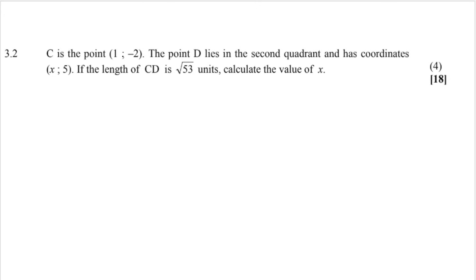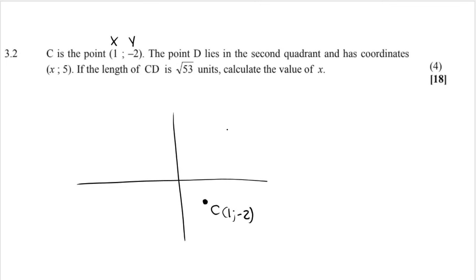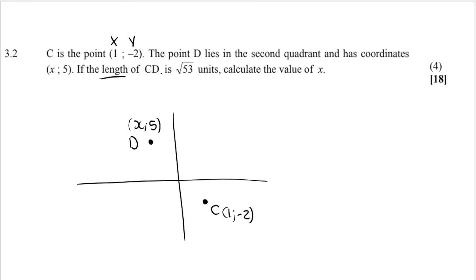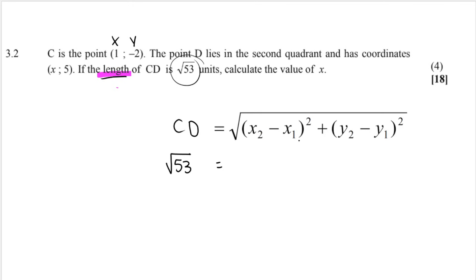My next question: C is a point (1, −2). D lies in the second quadrant and has coordinates (X, 5). If the length of CD is √53 units, calculate the value of X. It's clear we need to use the distance formula since we're given the length of the line. I've written out the distance formula. C is (1, −2) as number 1, and D is (X, 5) as number 2.